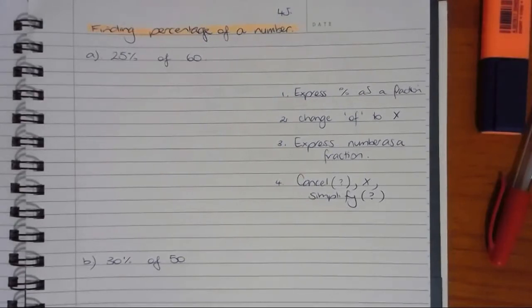This is from 4J in your textbook, and the types of questions we're talking about look like the examples here. Finding 25% of 60 or finding 30% of 50 - you're finding a portion of a larger number.